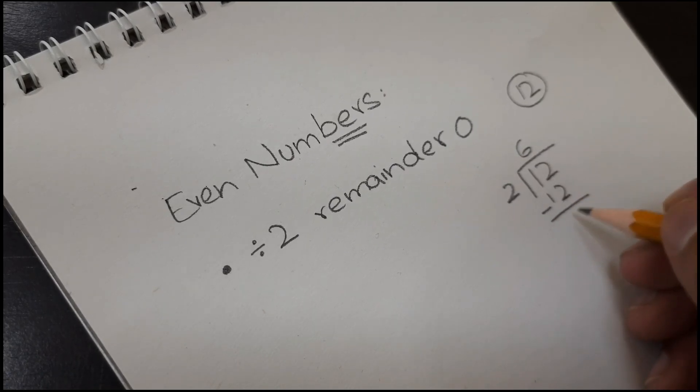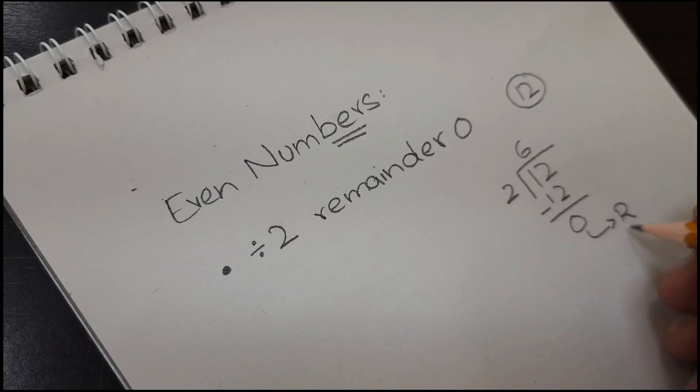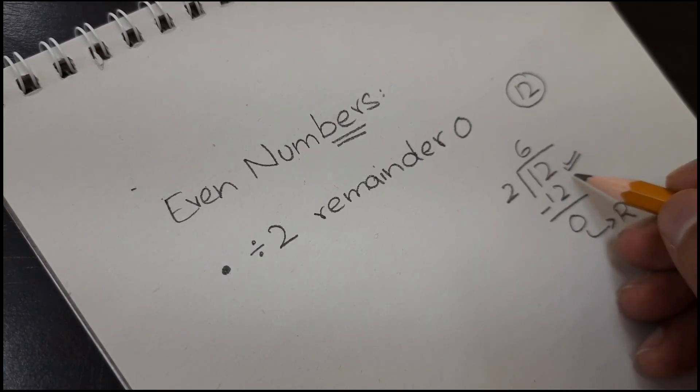Then, 12 minus 12 equals 0. Yes, we got the remainder 0, which means that 12 is an even number.